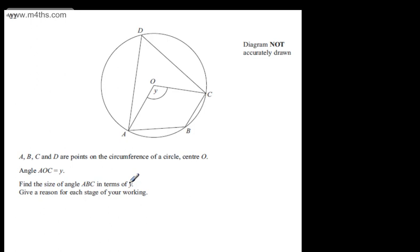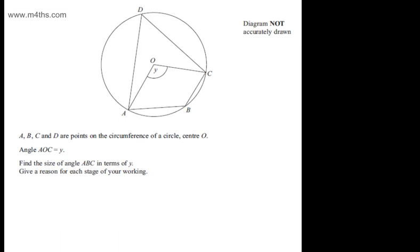This is question number 22 and it's an asterisk question. We're told A, B, C and D are points on the circumference of a circle center O. Angle AOC is equal to Y. We're asked to find the size of angle ABC in terms of Y. We're asked to give a reason for each stage of our working.